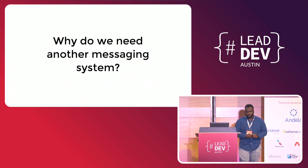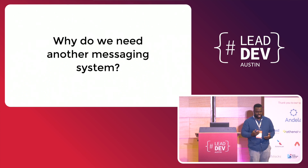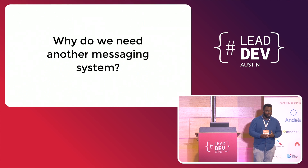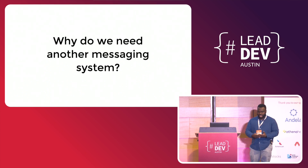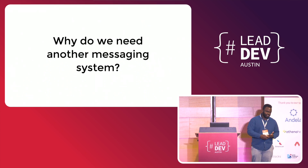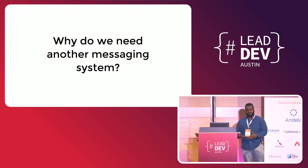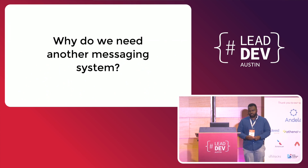So why do we need another messaging system? We have Kafka, we have RabbitMQ, we have ActiveMQ, we have SNS, we have Google PubSub, we have Kinesis. We can go on forever and ever. Why do we need another one?